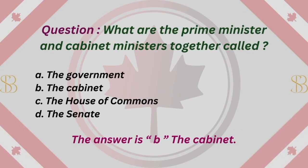Question: What are the Prime Minister and Cabinet Ministers together called? A. The Government. B. The Cabinet. C. The House of Commons. D. The Senate. The answer is B. The Cabinet.